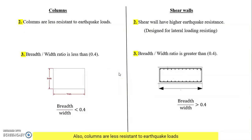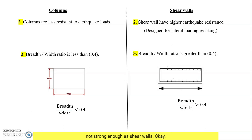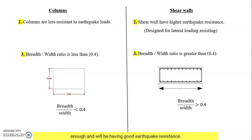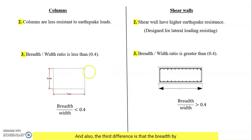Columns are less resistant to earthquake loads because they do not have that much capacity to withstand against earthquake loads — they are not as strong as shear walls. Shear walls have higher resistance, and they are mainly designed for lateral load resisting, which is why shear walls are provided to have good earthquake resistance.